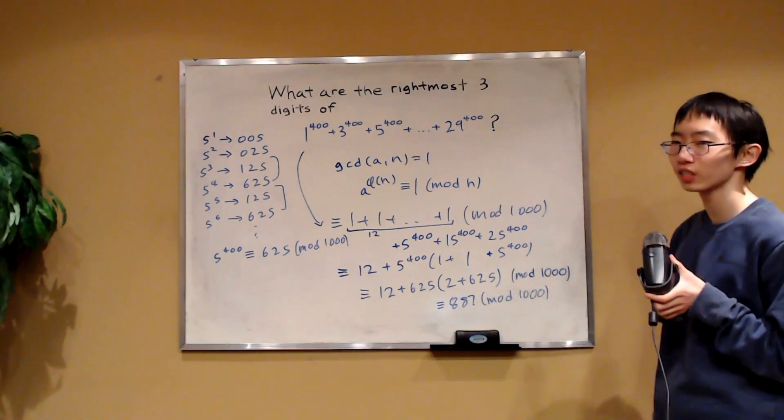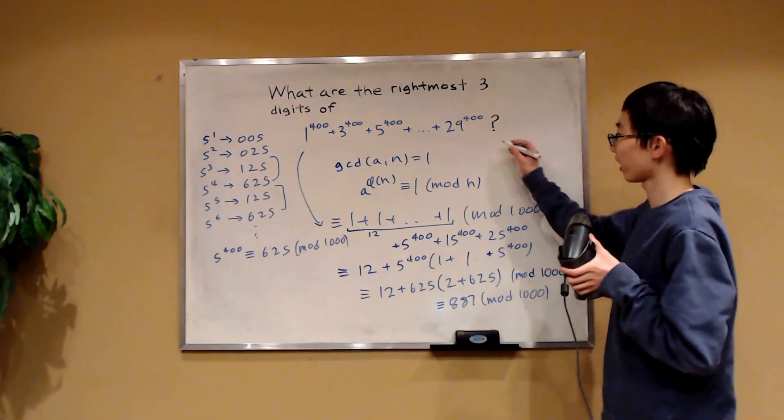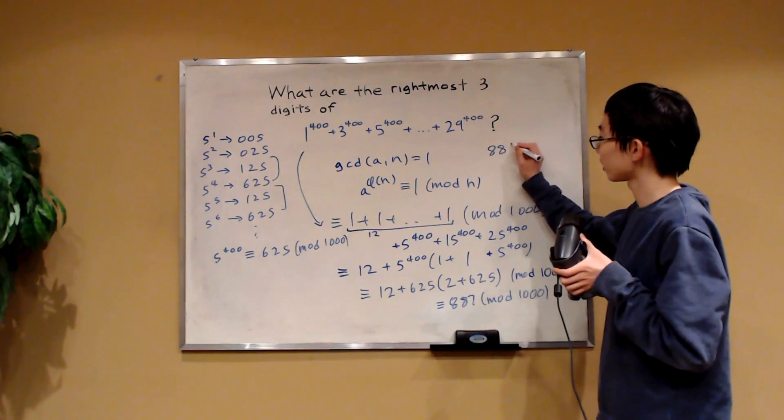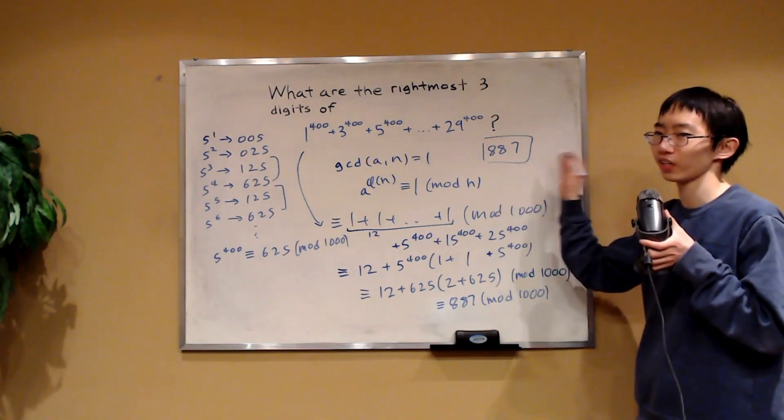And therefore since this number is congruent to 887 mod 1,000 this would mean that 887 are the last three digits therefore our answer is 887. This number ends in 887, that is our answer.